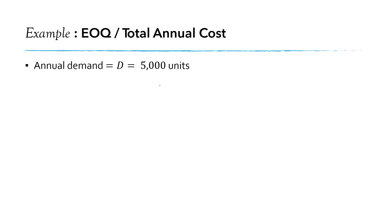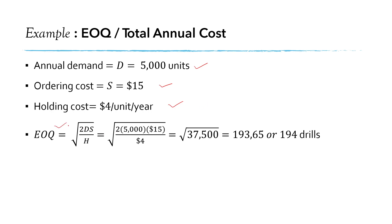From the problem statement we have the information for the annual demand that is 5000 units, ordering cost is $15, holding cost is $4 per unit per year, and we plug in these values in the EOQ formula.